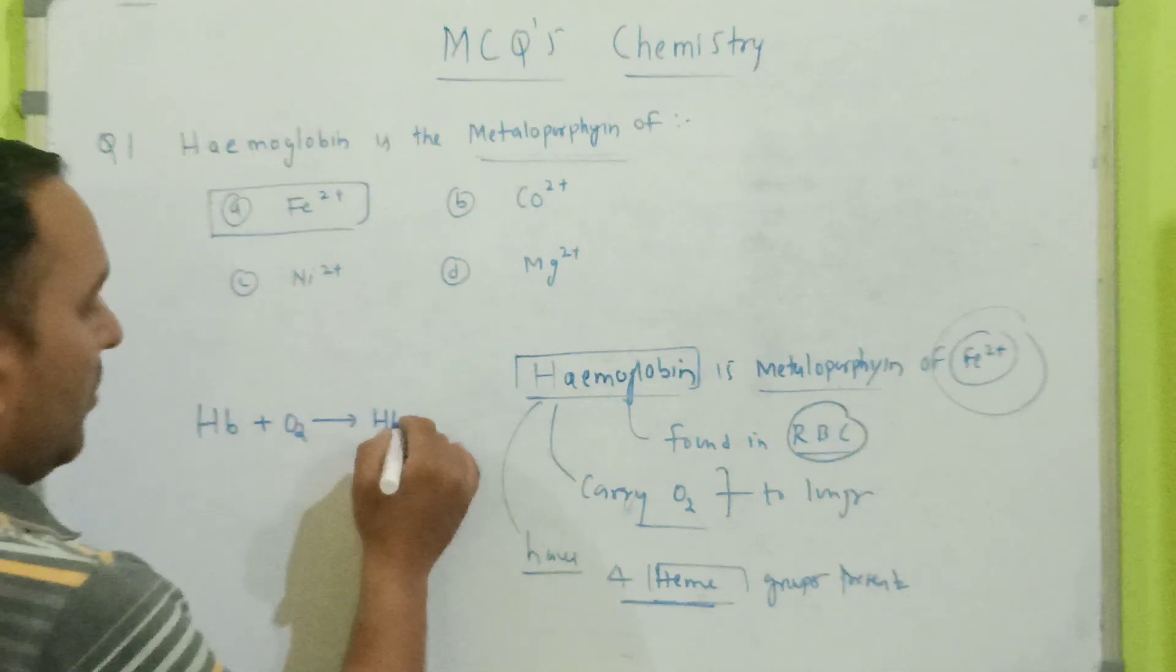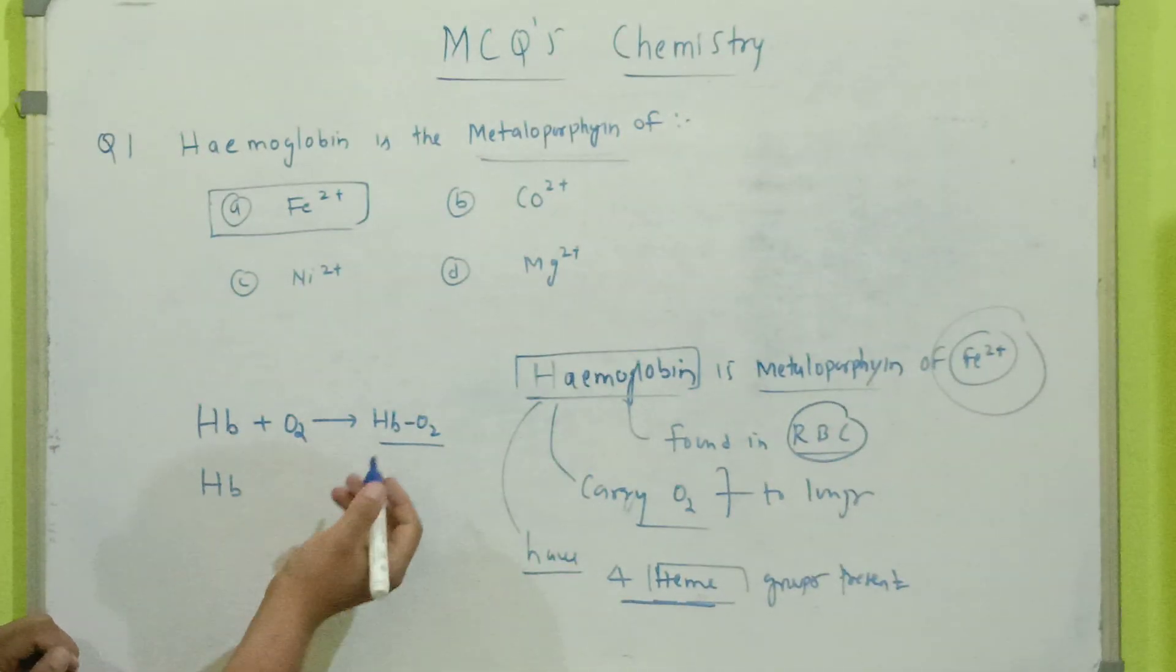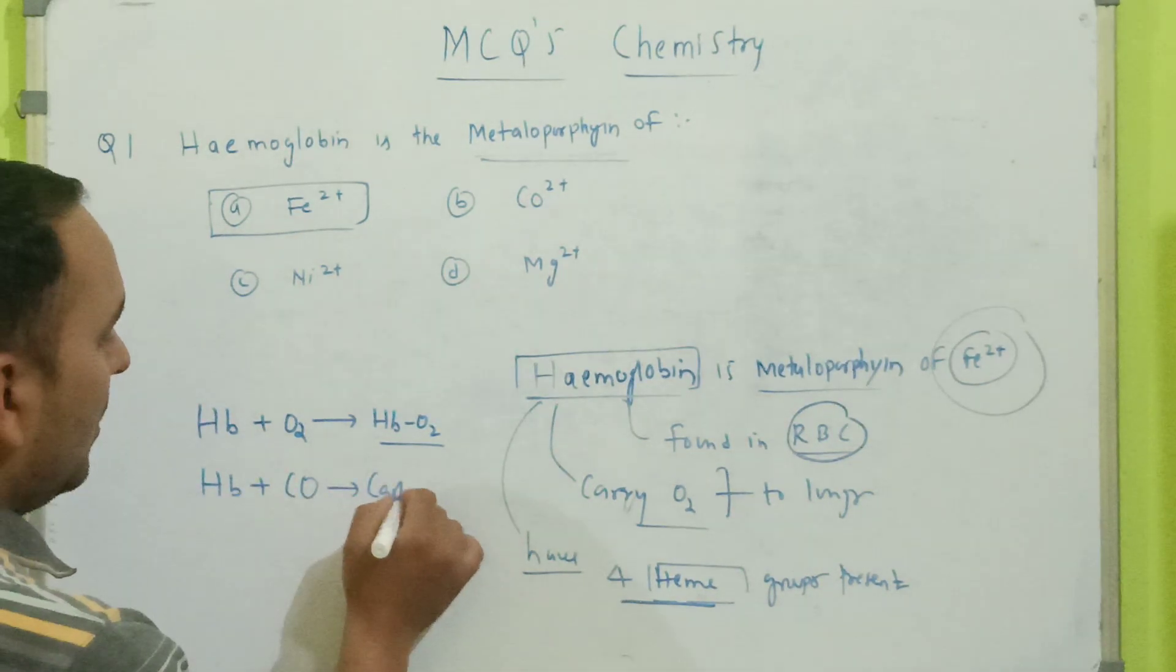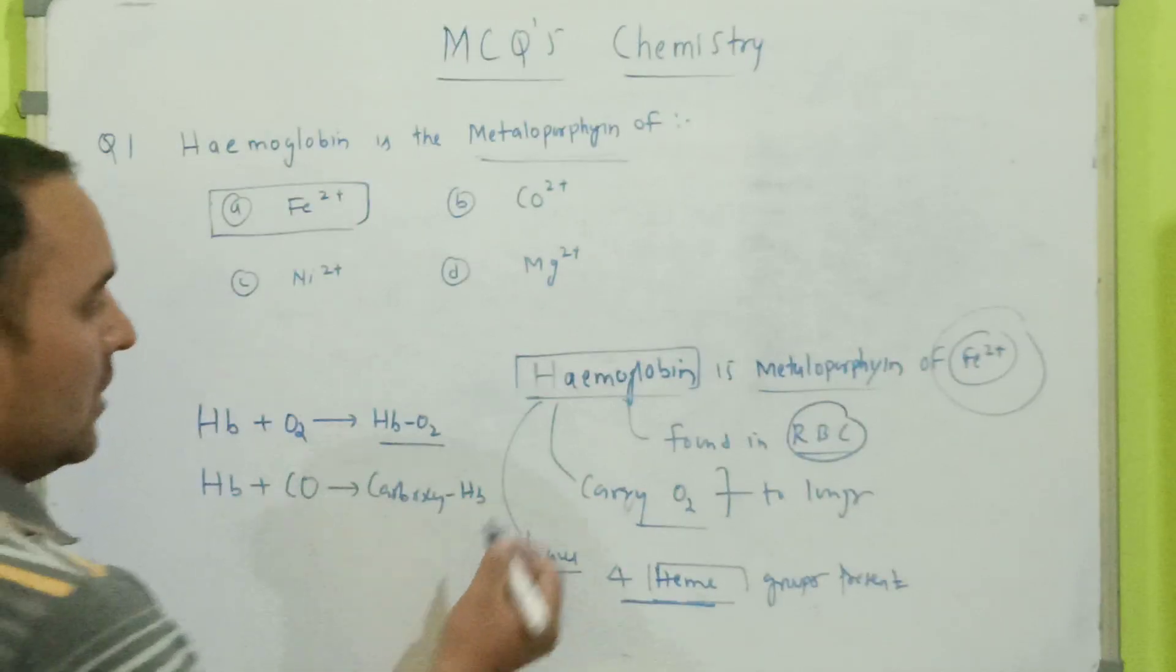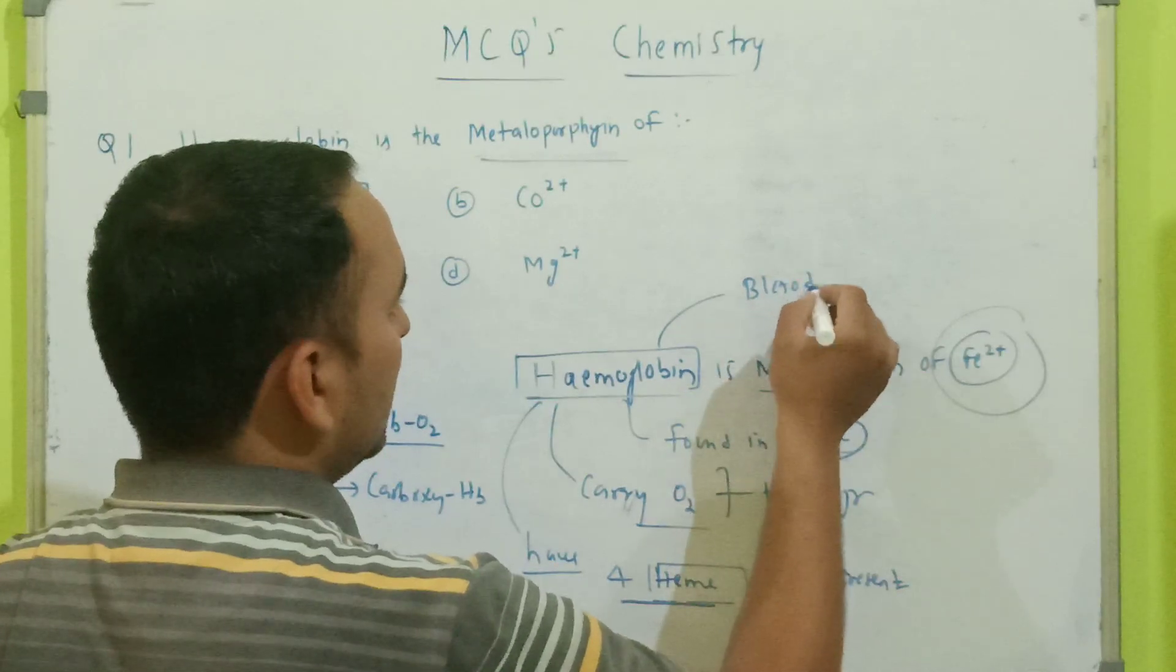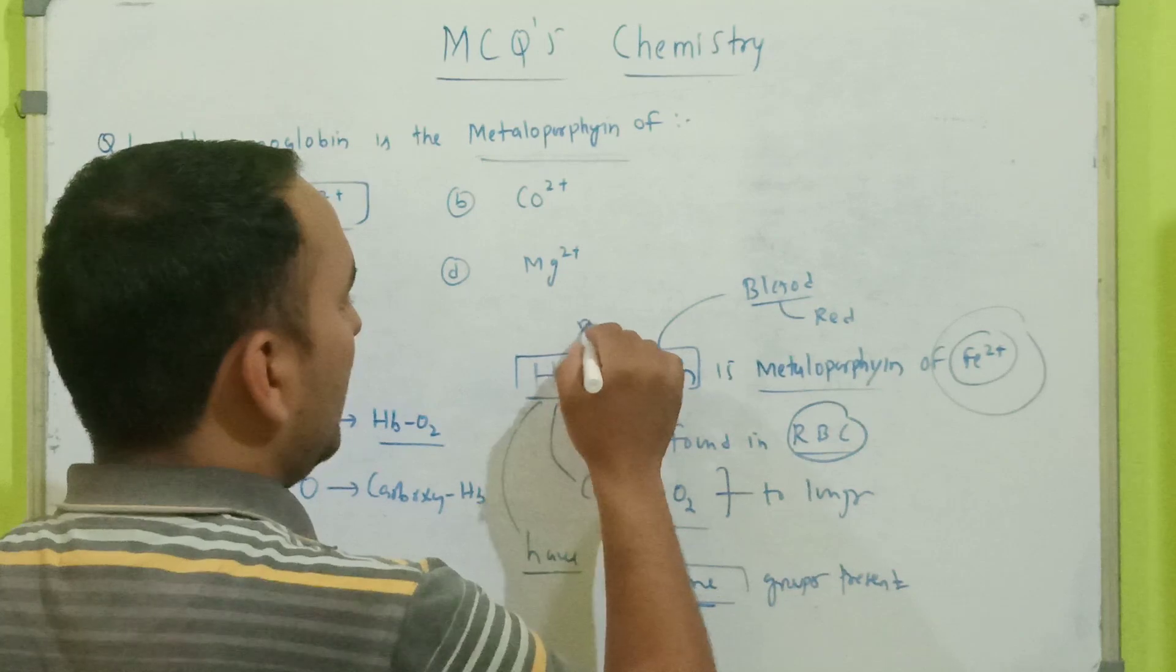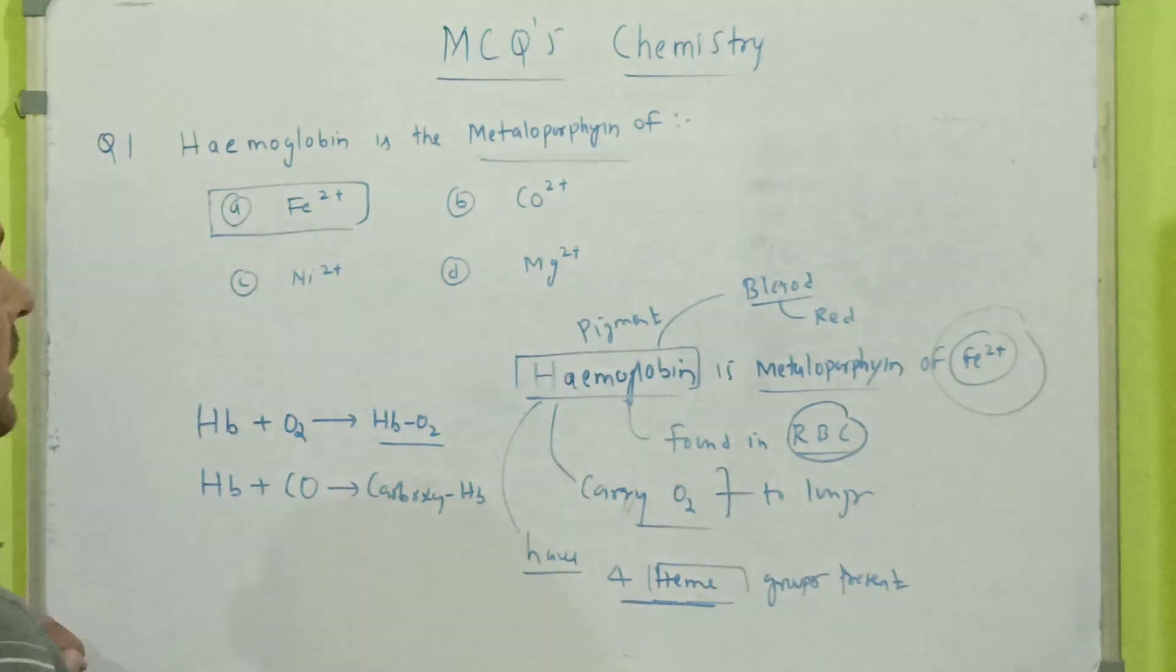Hemoglobin is a red color pigment. When combined with carbon monoxide, it forms carboxy hemoglobin. The color of blood is red because of the hemoglobin pigment.